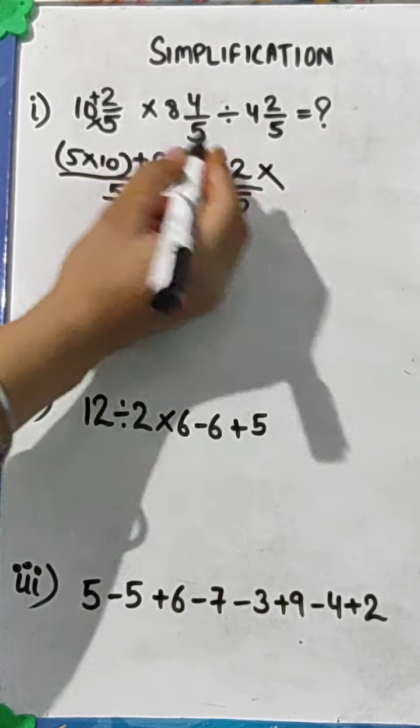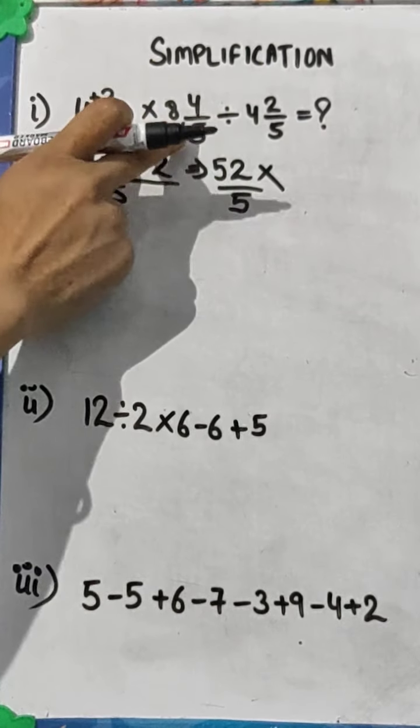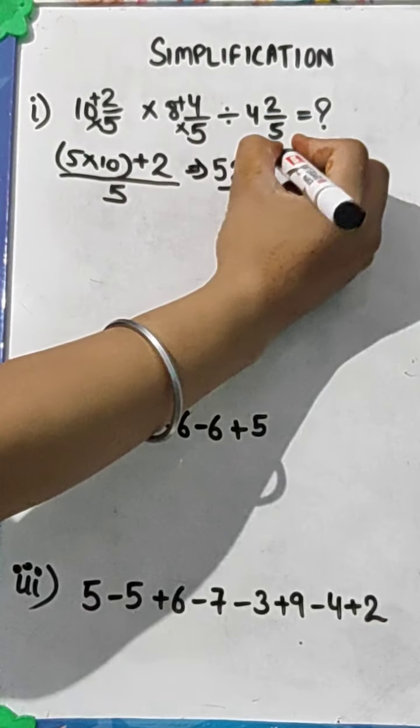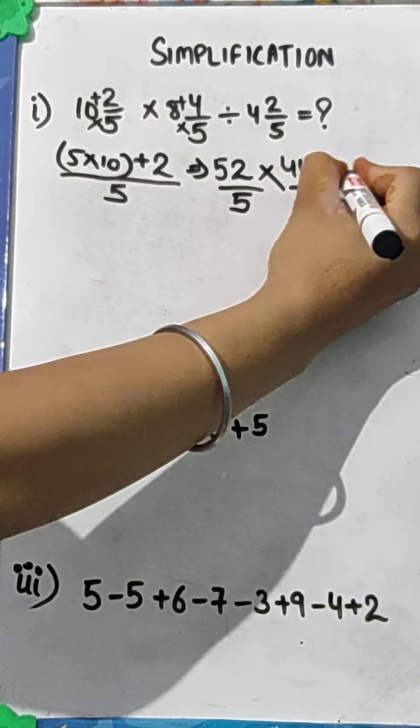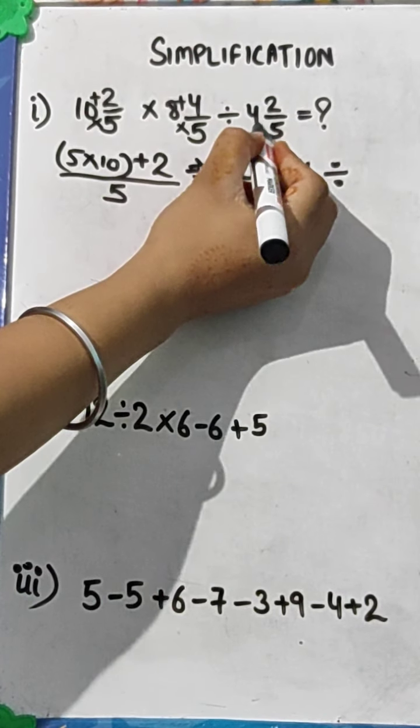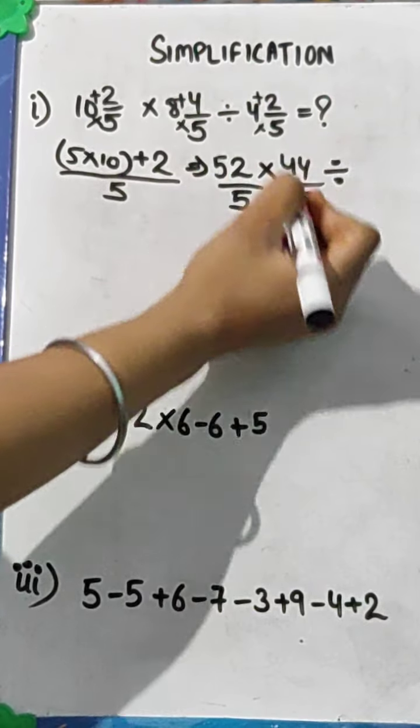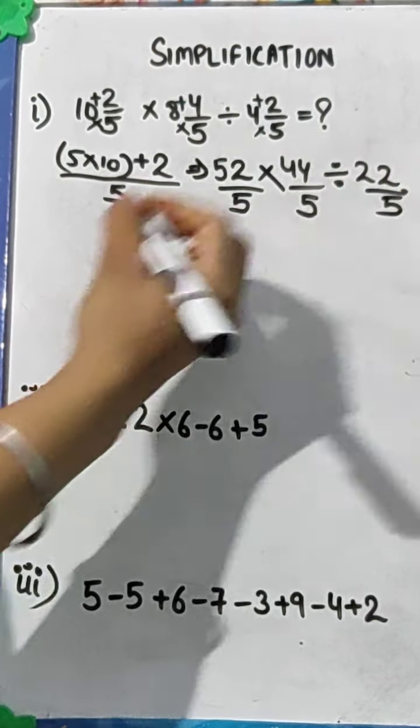Now put this sign of multiplication here. Now convert this one also. Multiply these two, 5 into 8, 40. 40 plus 4, you will get 44 divided by 5. Denominator remains as it is. Divided by, now multiply these two, 5 into 4, 20 and 20 plus 2, you will get 22. So 22 by 5.